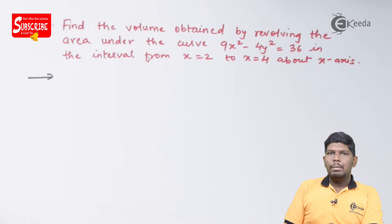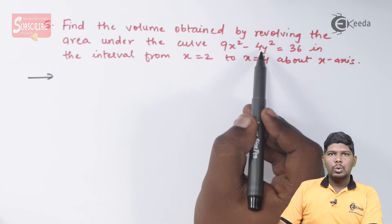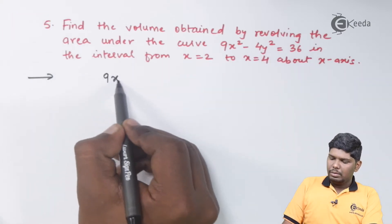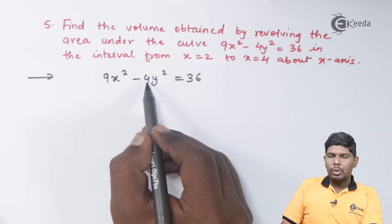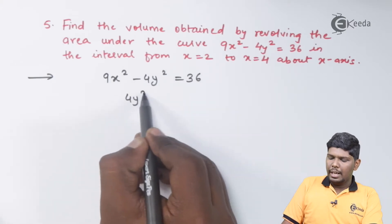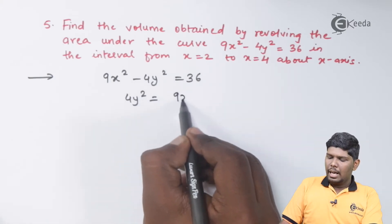So let us find the value of y² from the given equation. -4y² will become +4y² on the right hand side and we have 9x² - 36.